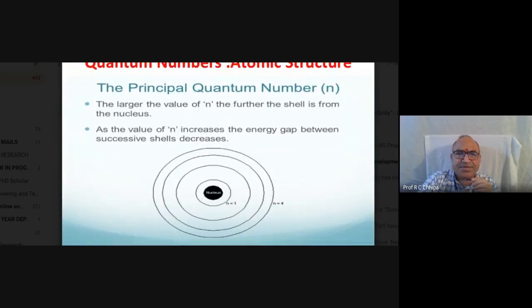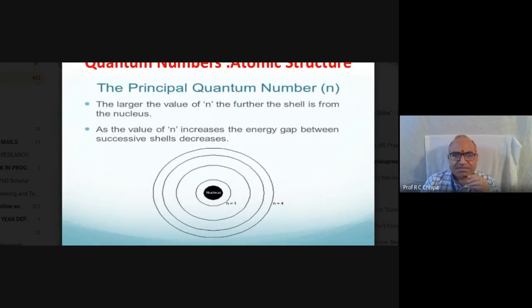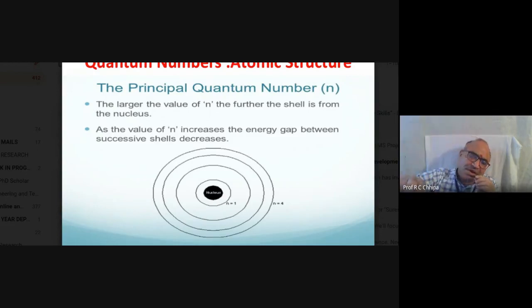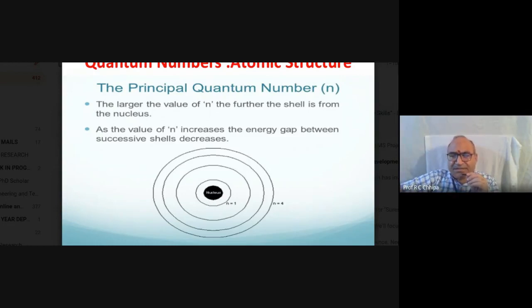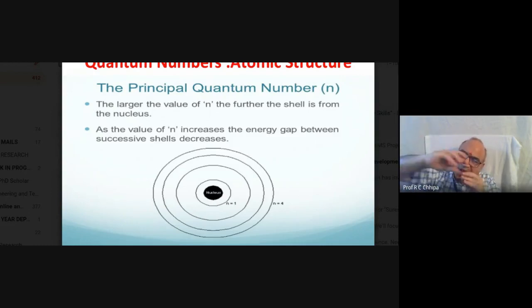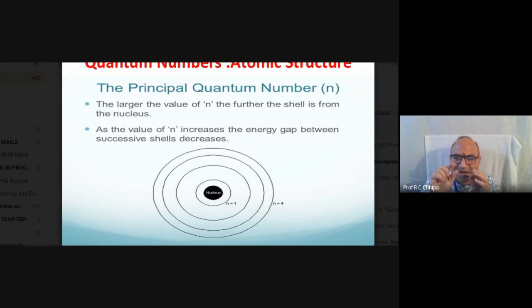The principal quantum number: the nucleus is at the center, surrounded by shells n = 1, 2, 3, 4. The larger the value of n, the further the shell is from the nucleus. As the value of n increases, the energy gap between successive shells decreases. This is the principal quantum number.